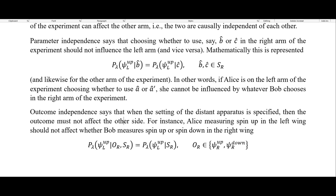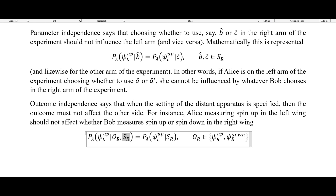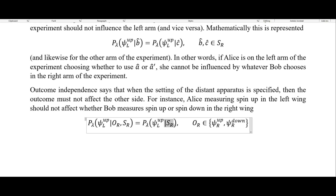Outcome independence, on the other hand, says that when the setting of the distant apparatus is specified, the outcome must not affect the other side. Whether it actually is spin up or spin down on one side should not affect the other side. For instance, Alice measuring spin up in the left wing should not affect whether Bob measures spin up or spin down in the right wing. Mathematically, the probability of Alice in the left wing getting spin up, given Bob's outcome (spin up or spin down) and his parameter choice, is equal regardless of Bob's outcome — Bob's outcome is not going to affect the probability of Alice getting spin up or spin down.